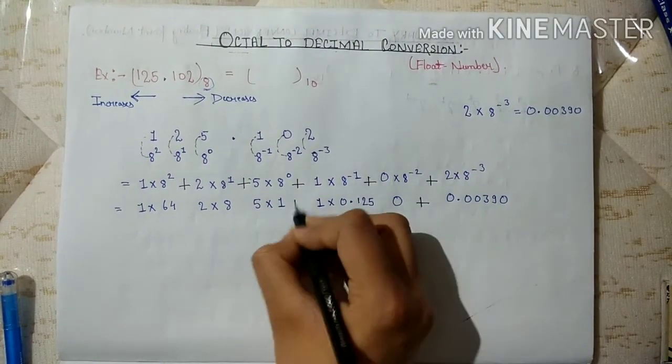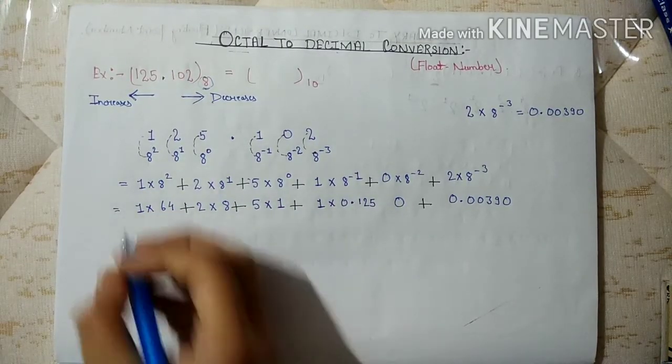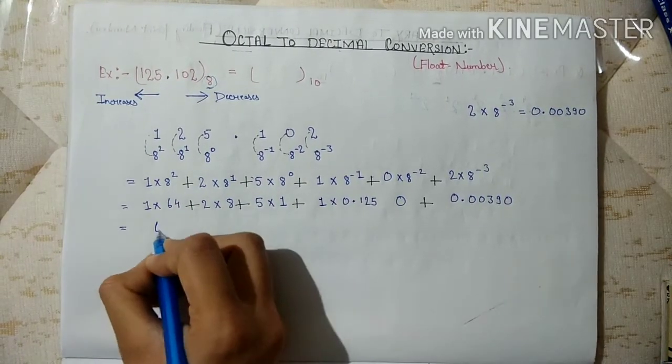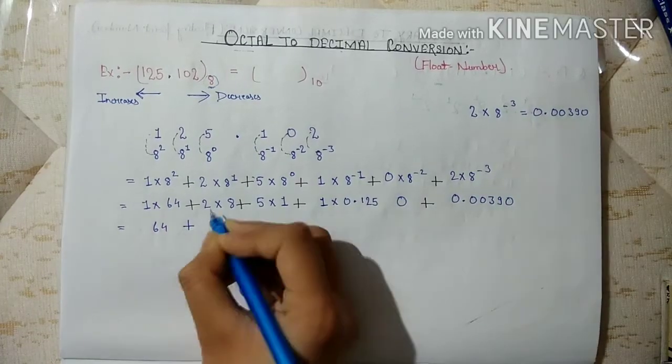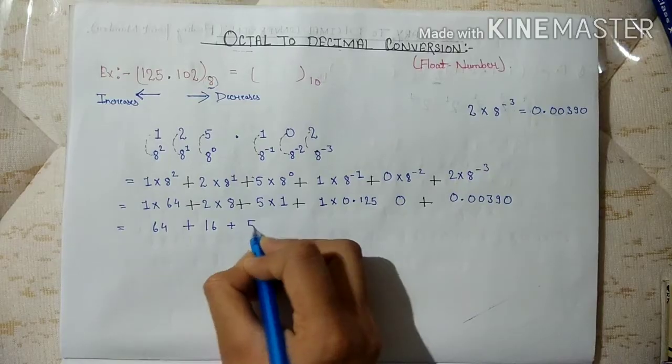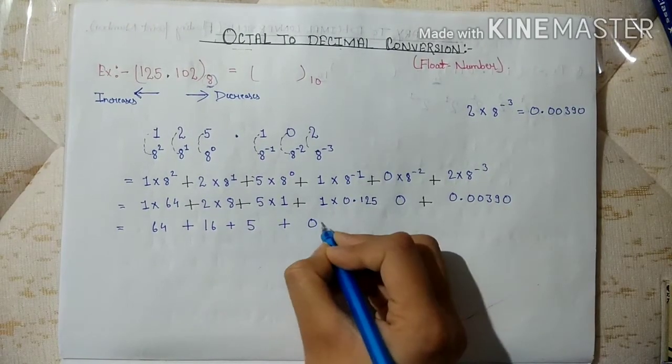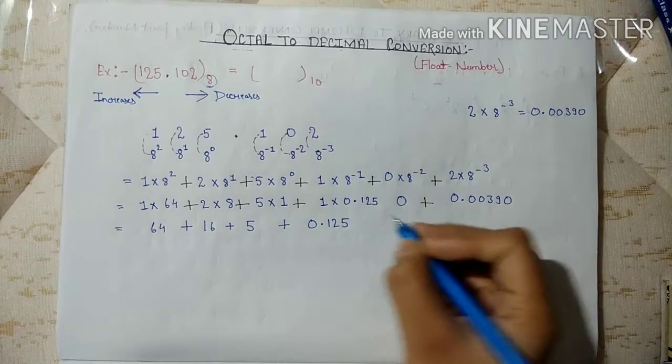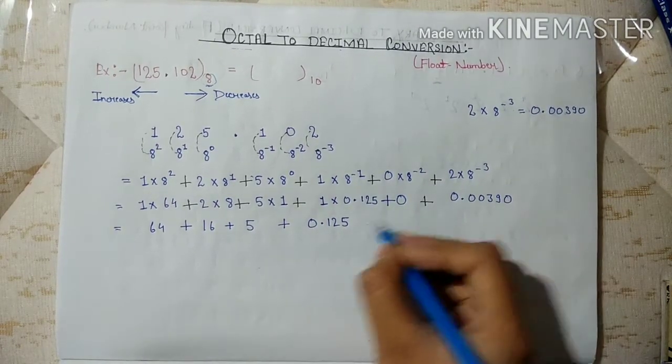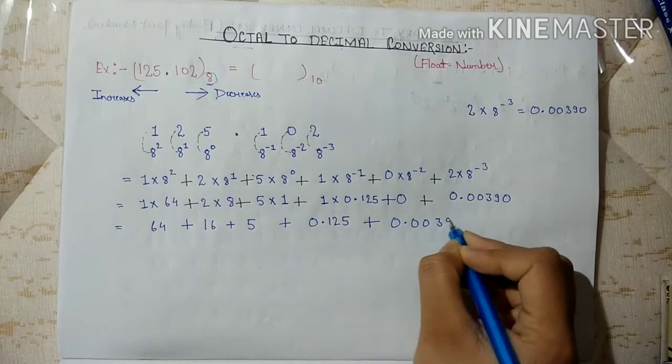Here also, 64 into 1 is 64, plus 16 into 1 is 16, plus 5 into 1 is 5, plus 0.125, plus 0.00390.